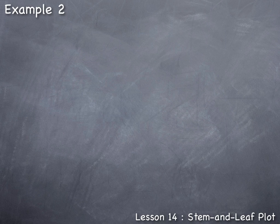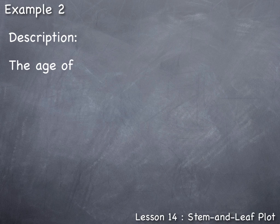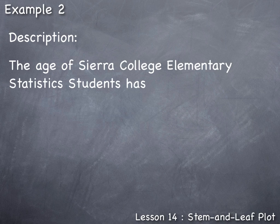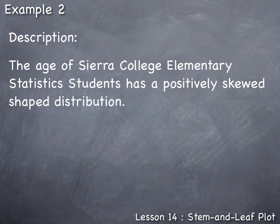So when we make our description, we can say the age of Sierra College elementary statistics students has a positively skewed shape distribution.